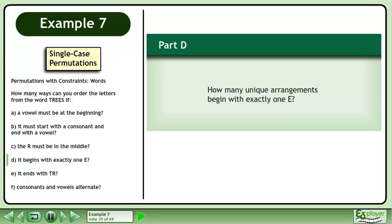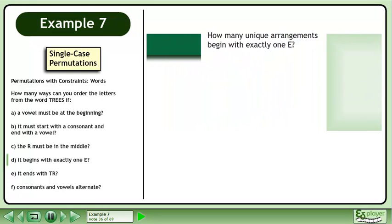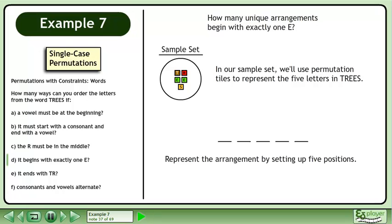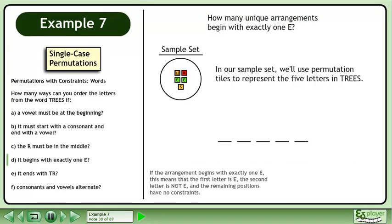In Part D, how many unique arrangements begin with exactly one E? In our sample set, we'll use permutation tiles to represent the five letters in TREES. Represent the arrangement by setting up five positions. If the arrangement begins with exactly one E, this means the first letter is E, the second letter is not E, and the remaining positions have no constraints.